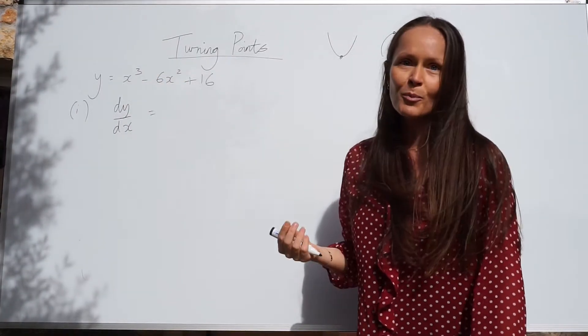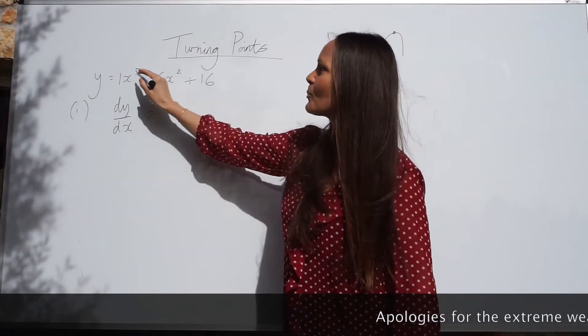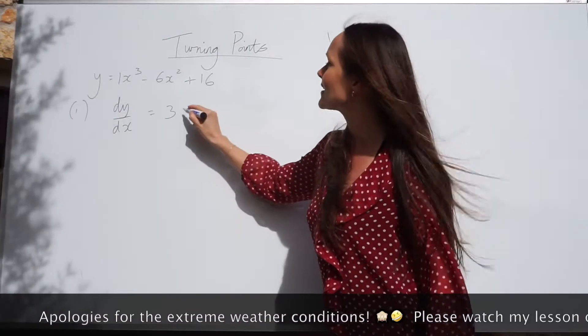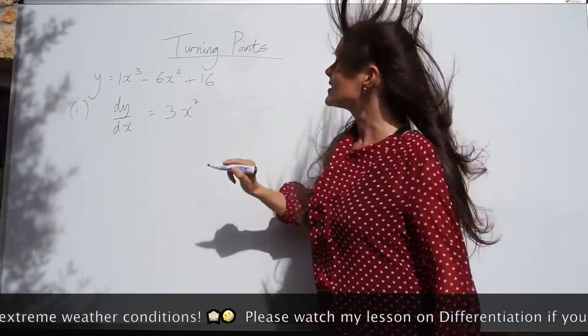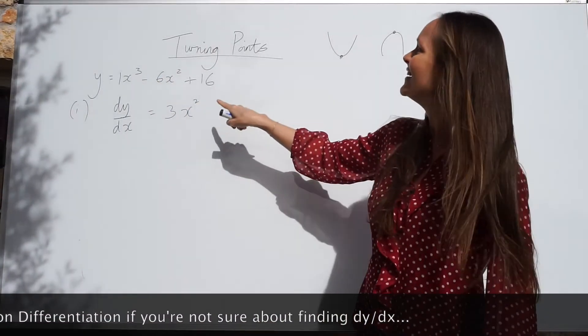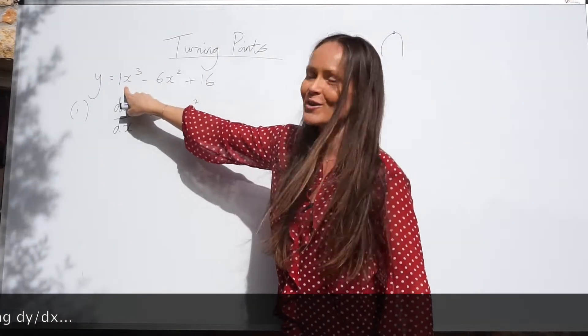And you need to multiply that number by 1. We've got 1x cubed here. 3 multiplied by 1 is 3. And then the power on the x decreases by 1. So 3 minus 1 is 2. Sorry, it's a bit windy in my garden today. So now we've got 3x squared. I've differentiated the first term.